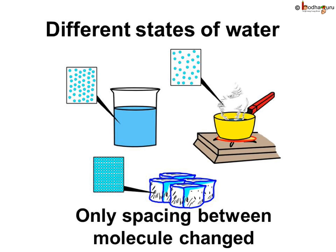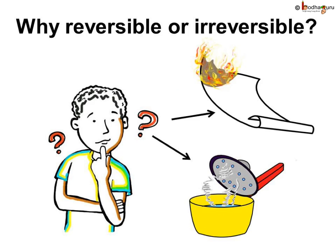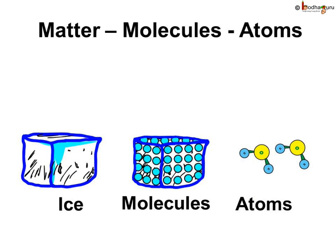Now the question is, why are some changes reversible, that is physical changes, and some are irreversible, that is chemical changes? This is because the molecules are made up of something else. We know matter is made up of molecules and molecules are made up of atoms.